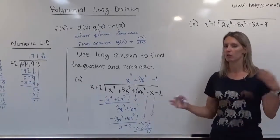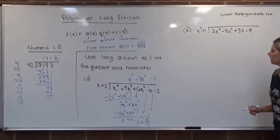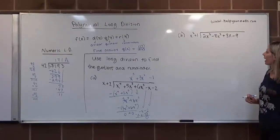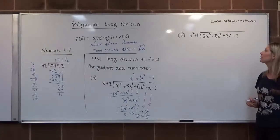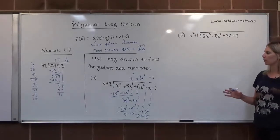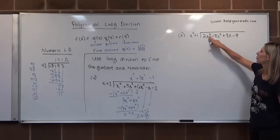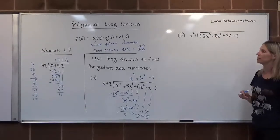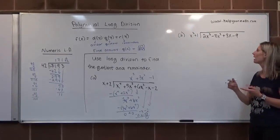Hopefully we'll see a remainder in the next example. We have x²+1 dividing into 2x³-8x²+3x-9. One important thing to note is that we should make sure the exponents go in decreasing order: 3, 2, 1, 0. We want to be careful that nothing gets skipped.